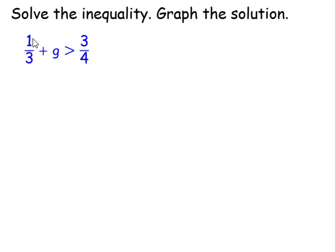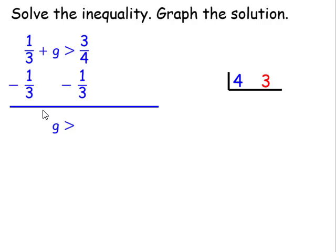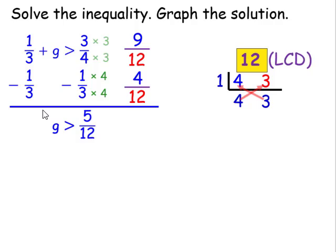In this particular case, you must think of this as a positive one-third. To undo this positive one-third, to cancel it out, we have to subtract one-third from both sides. On the left-hand side, we'll be left with just g is greater than. And in order to add or subtract fractions, we need to have like denominators. What number goes into both 4 and 3? Well, that's 1. 1 goes into 4 four times, and 1 goes into 3 three times. We're going to multiply the fraction with a denominator of 4 top and bottom by 3, and the fraction with a denominator of 3 top and bottom by 4. 9 twelfths minus 4 twelfths gives me a total of 5 twelfths.